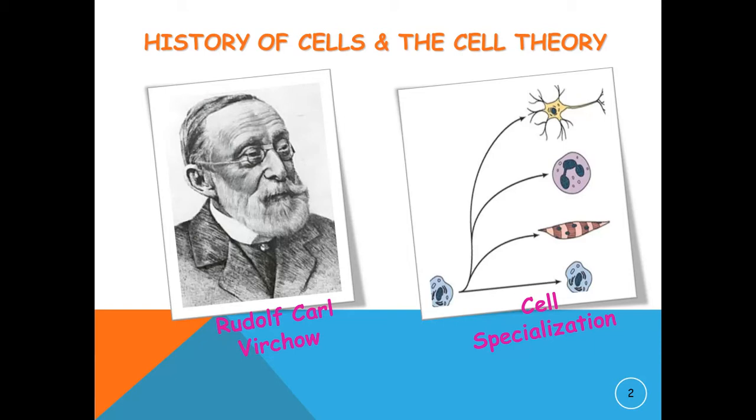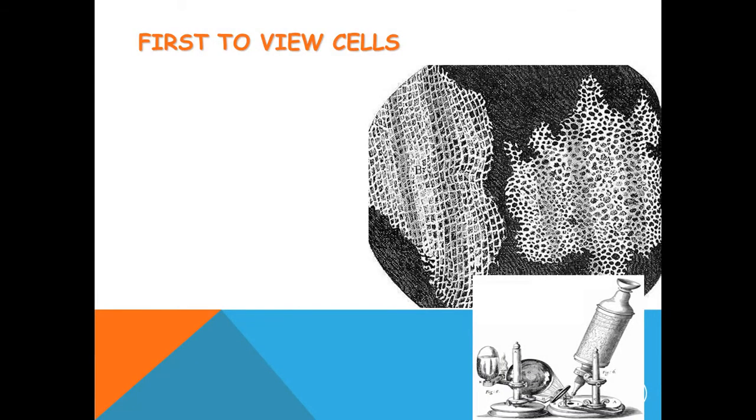Virchow used the theory that all cells arise from pre-existing cells to lay the groundwork for cellular pathology, or the study of disease at the cellular level. He put forth a cell theory based on three components: first, all living organisms are made of cells; second, cells are the basic unit of life for all living things; and third, all cells arise from pre-existing cells.